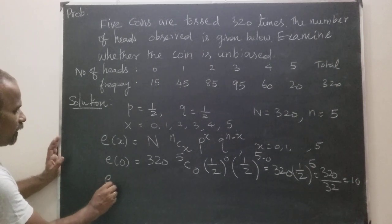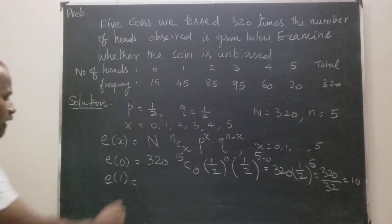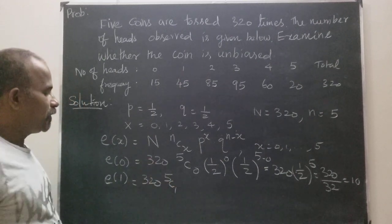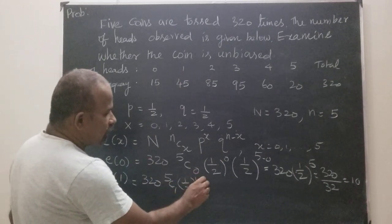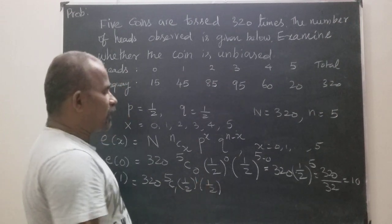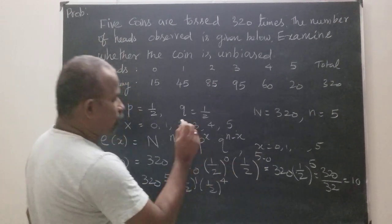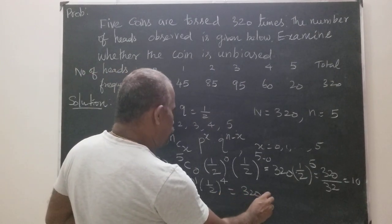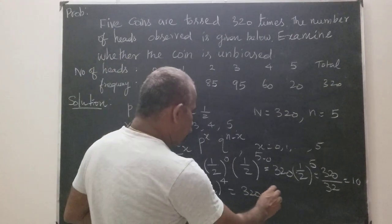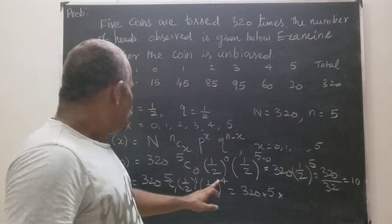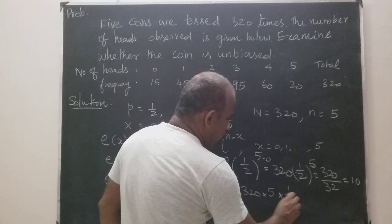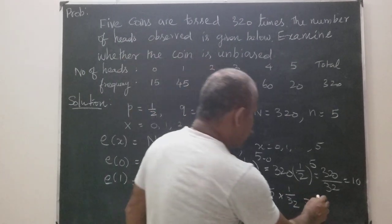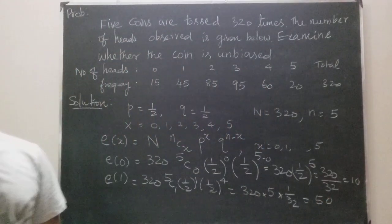Similarly, E(1) = 320 · 5C1 · (1/2)^1 · (1/2)^4 = 320 · 5 · (1/32) = 320 × 5 × (1/32). So 10 × 5 = 50. Therefore E(1) = 50.